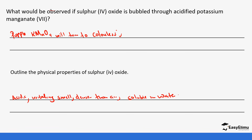That brings us to the end of this lesson. In the next lesson we are going to continue with the properties of sulfur dioxide — in this session we talked about its reducing properties, so in the next session we're going to look at its oxidizing properties. See you in the next lesson.